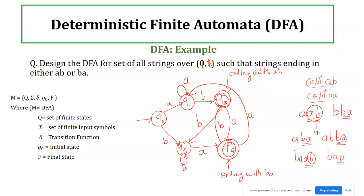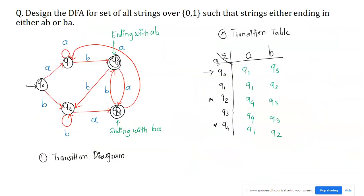Now we complete the formal definition. The set of states Q = {q0, q1, q2, q3, q4}. Input symbols are 'a' and 'b' (it was written as 0,1 by mistake earlier). The initial state is q0. There are two final states: q2 and q4, since both represent accepted endings — q2 for 'ab' and q4 for 'ba'. These form a subset of Q.